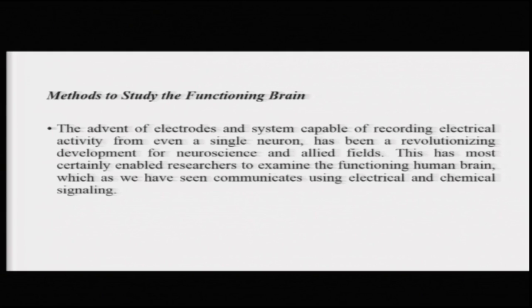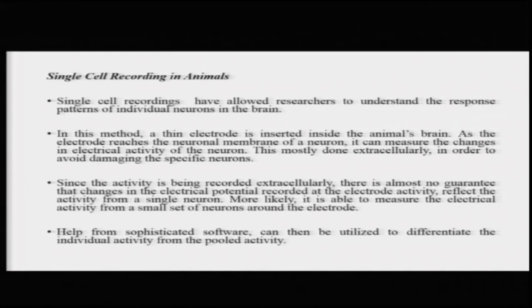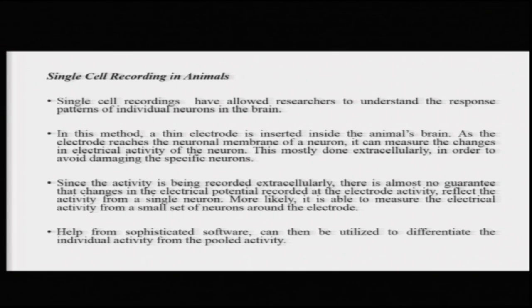The foremost method, very instrumental especially for animal models, to understand the generic functioning of a mammalian brain is that of single cell recordings. Single cell recordings have allowed researchers to understand the response patterns of individual neurons in the brain — basically allowing you to look at how a single neuron behaves. In this method, a thin electrode is inserted inside the animal's brain and, as the electrode reaches the vicinity of neuronal membranes, it can measure changes in the electrical activity surrounding it.